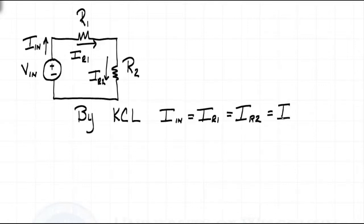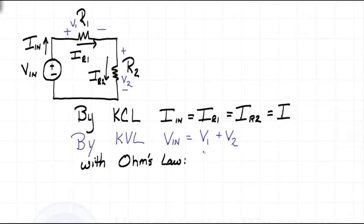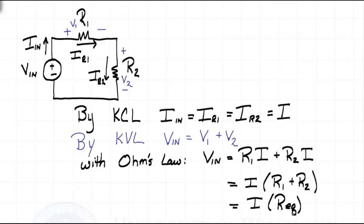Since all of the currents are equal, let's simply call it I. We can then indicate the voltages across R1 as V1 and the voltage across R2 as V2. By KVL, Kirchhoff's Voltage Law, we write VN equals V1 plus V2. Substituting Ohm's Law (V equals R times I), we have VN equals R1 times I plus R2 times I. Since I is common to both terms we can factor it out, giving VN equals I times the quantity R1 plus R2. Alternatively, we can say VN equals I times an equivalent resistance R_eq.